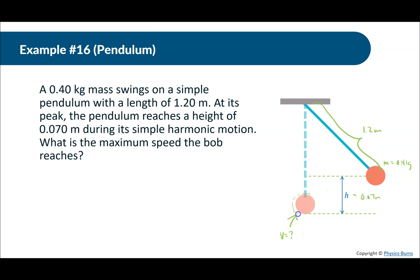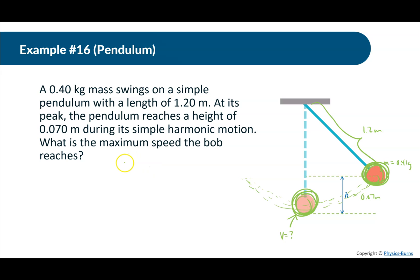The pendulum swings back and forth, and the lowest point is where it's going the fastest — speeding up on the way down, fastest at the bottom, then slowing down on the way up. We use energy conservation: at the peak it's momentarily still, so all energy is gravitational potential energy; at the lowest point there's no gravitational PE, just kinetic energy.